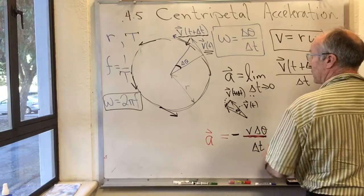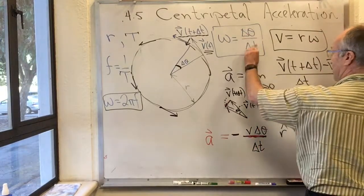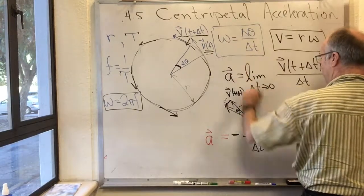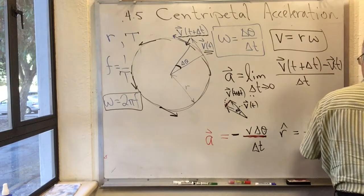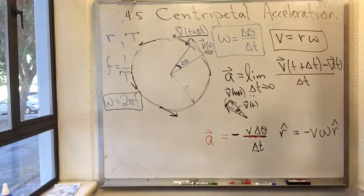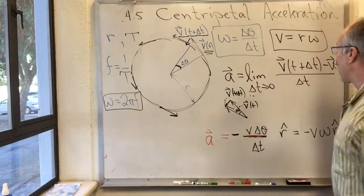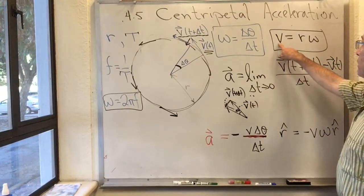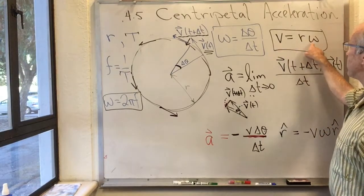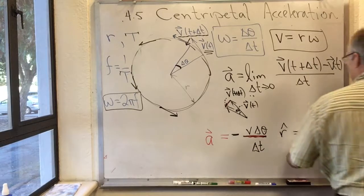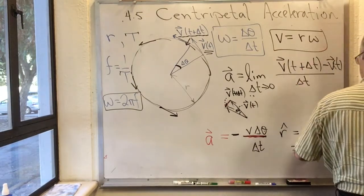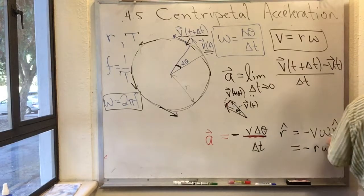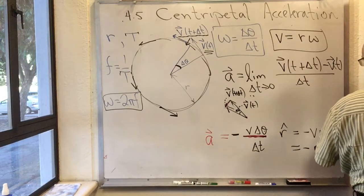Delta theta over delta t. What of my results was that delta theta over delta t is omega. So we already have that this is minus v omega r hat. Now, that's not the most common way to write it. A more common way to write it is to use that the length of the vector v is itself r omega. So then we have minus r omega times omega. So that makes r omega squared times r hat.